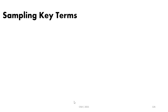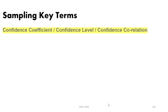We also need to understand key terms related to sampling from the CISA exam perspective. The first concept is the confidence coefficient, also called the confidence level or confidence correlation. The confidence coefficient is related to the sample size — for instance, when the sample represents 95 percent of the population, the confidence coefficient will be 95 as well. It is proportional with the sample size.